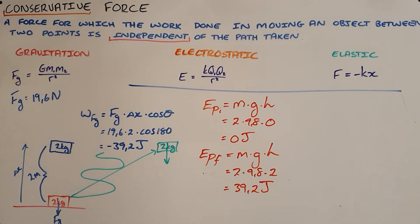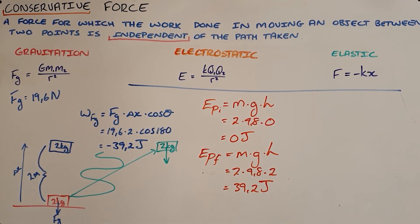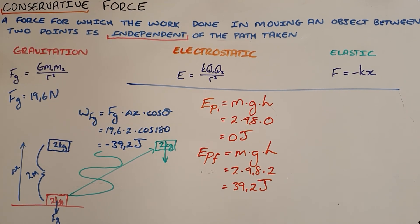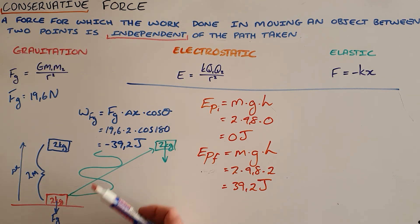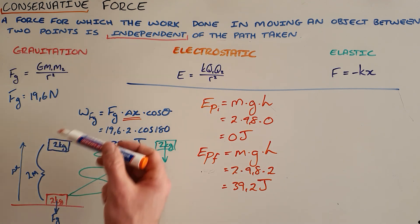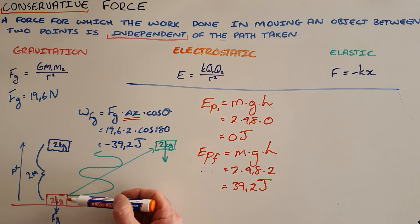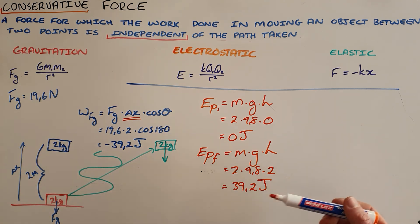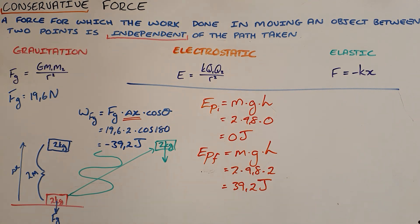There are two important things to remember about conservative forces. First, the path taken does not affect the amount of work done — it is the displacement that matters, and when doing work against gravity, only the vertical height change is relevant. Second, the force is conservative, meaning energy is not lost but converted into some other form of potential energy.